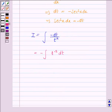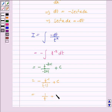Now, this integral is equal to minus t to the power minus 2 plus 1 upon minus 2 plus 1 plus c, which is equal to minus t to the power minus 1 plus c, which is equal to 1 upon t plus c.